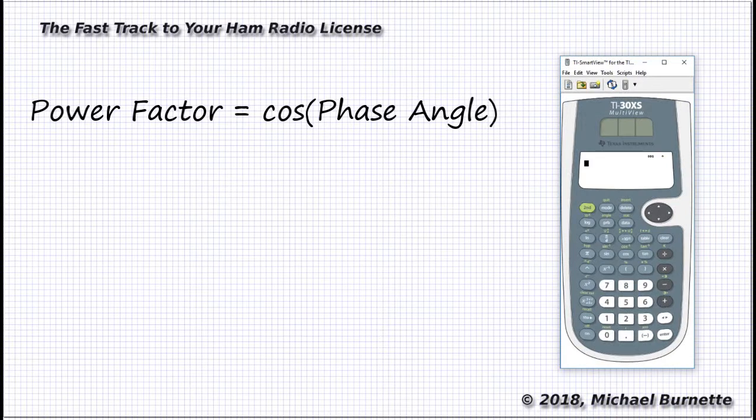Now if you're using your trusty TI-30XS calculator, you just press the cos key, enter the phase angle, let's throw in 30 for an example, and add a parenthesis, press enter, and there's the power factor.